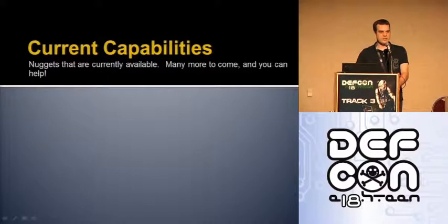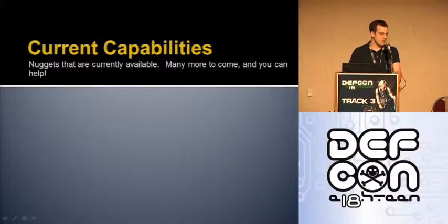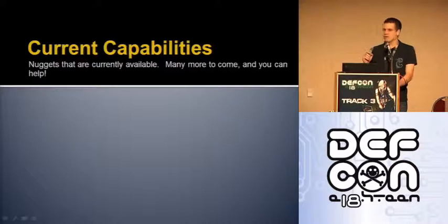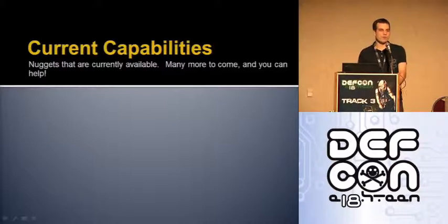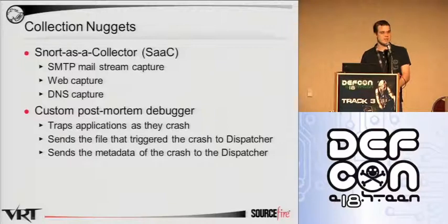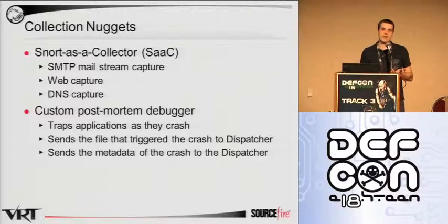Part of the reason we're here talking to you today is that we want to solicit your participation in the development of new nuggets, given that it is an open source project. The following slides represent what we've been able to achieve in house with a minimum amount of time and effort. We tried not just to include our own work but also to integrate a lot of third-party software to show how the framework allows for that extensibility. We saw Snort as a collector in the context of SMTP traffic, and we've also got web and DNS builds. Snort is good for this because it's an easy way to get stuff off the wire and it's easy to incorporate.